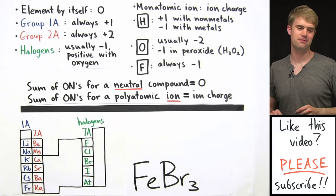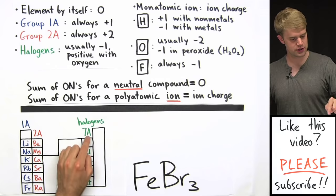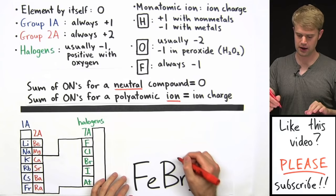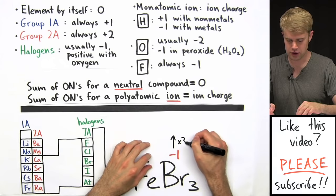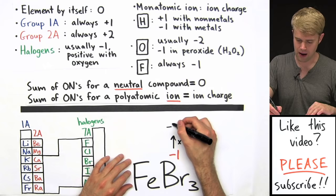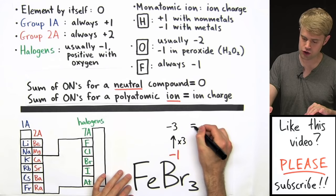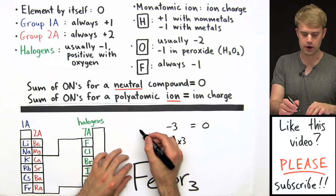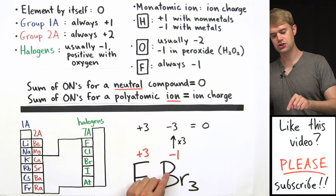FeBr3. There's no rule for Fe, so we figure out its oxidation number using what we know about Br. Bromine is one of the halogens in group 7A and is usually minus 1 except with oxygen. We have 3 bromines, so we multiply minus 1 times 3 to get a total of minus 3 for Br. For the neutral compound to sum to 0, Fe must be plus 3. The oxidation number for Fe is plus 3, and for each Br it's minus 1.